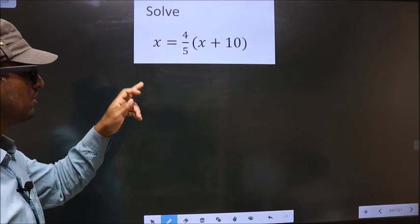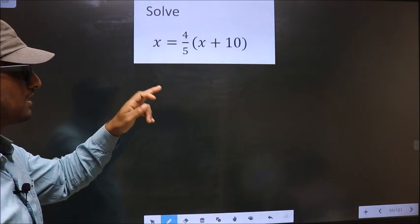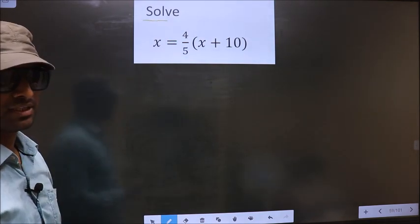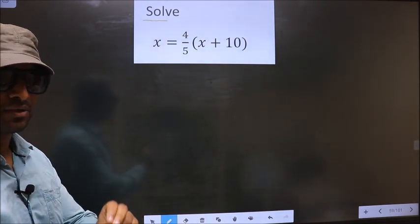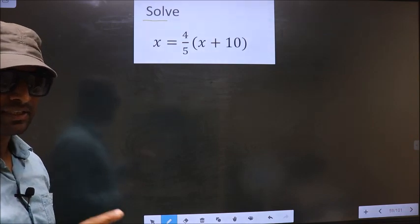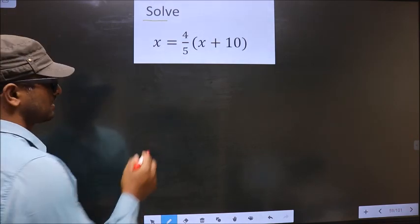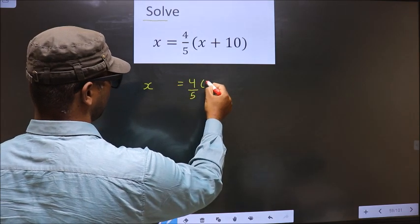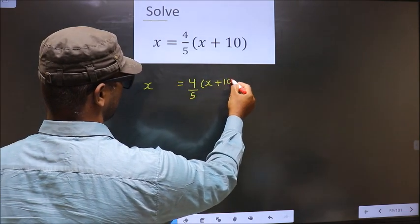Solve x = 4/5(x + 10). They told us to solve, so we should find the value of x. First, the given equation is x = 4/5(x + 10).